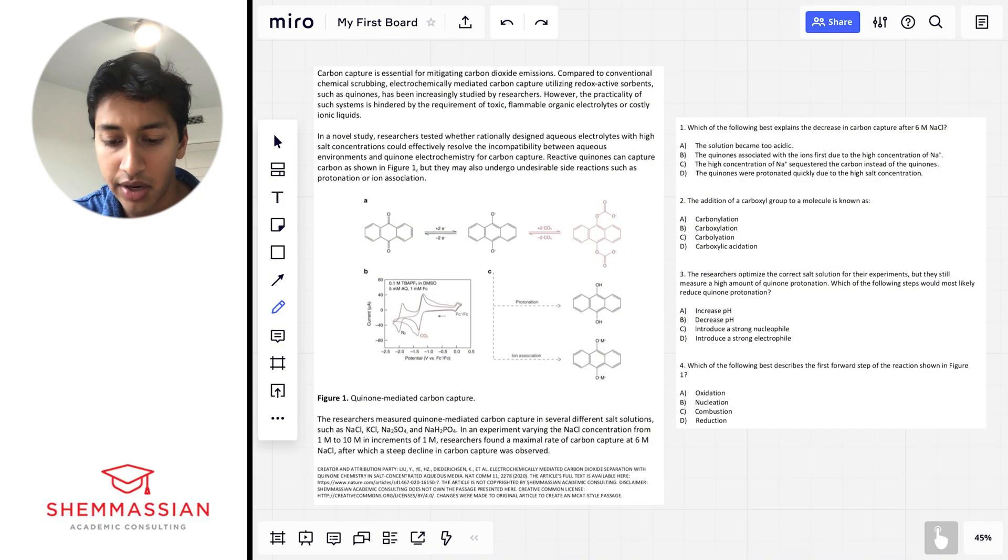All right, so we have a passage here and upon first glimpse one thing we can notice right off the bat is it's relatively short MCAT passage wise. Sometimes, especially when it comes to chemistry, biology, psych, soc, it's possible to get a passage that's really three paragraphs long in one figure which is again quite short when it comes to MCAT passages. So let's get started. Carbon capture is essential for mitigating carbon dioxide emissions. Compared to conventional chemical scrubbing, electrochemically mediated carbon capture utilizing redox active sorbents such as quinones has been increasingly studied by researchers. However, the practicality of such systems is hindered by the requirement of toxic, flammable, organic electrolytes or costly ionic liquids.